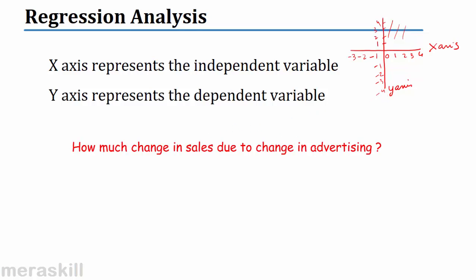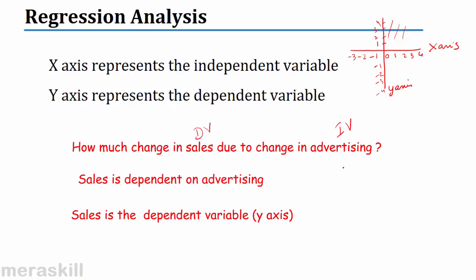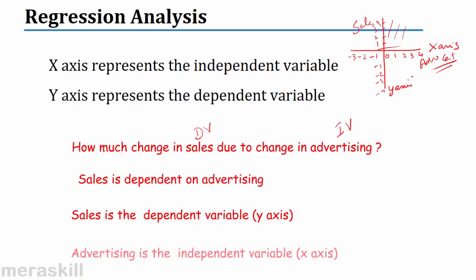How much change in sales is due to a change in advertising? Advertising is the independent variable and sales is going to change based on the change in advertising — we are trying to build a relationship. Sales is dependent on advertising, so sales is the dependent variable on the y-axis, and on the x-axis we represent the advertising costs.